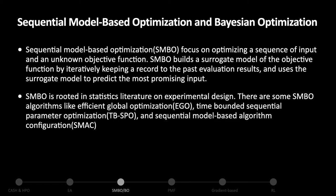Next, we discuss another algorithm family called Sequential Model-Based Optimization, or SMBO. SMBO focuses on optimizing a sequence of inputs for an unknown objective function F. It builds a surrogate model of F by iteratively keeping a record of past evaluation results, and uses the surrogate model to predict the most promising next input. SMBO is rooted in the statistics literature on experimental design. Some SMBO algorithms include Efficient Global Optimization (EGO), Time-Bounded Sequential Parameter Optimization (TBSPO), and Sequential Model-based Algorithm Configuration (SMAC).